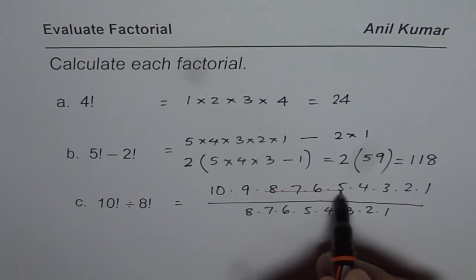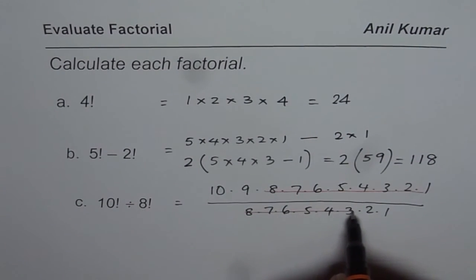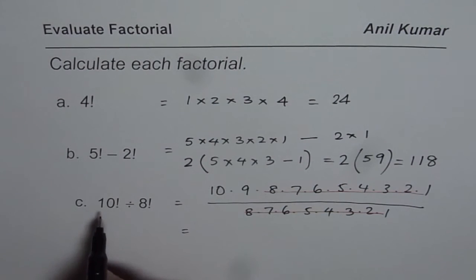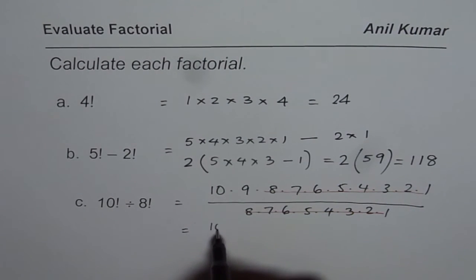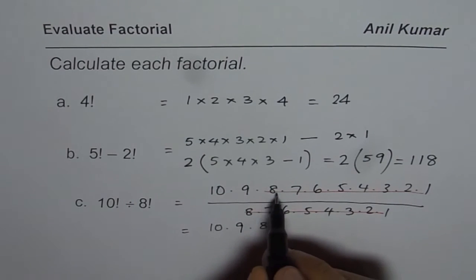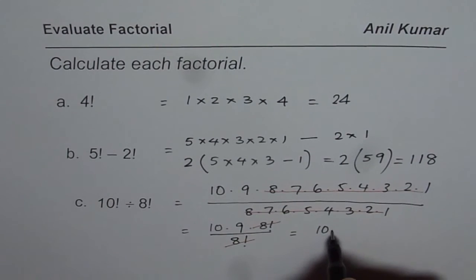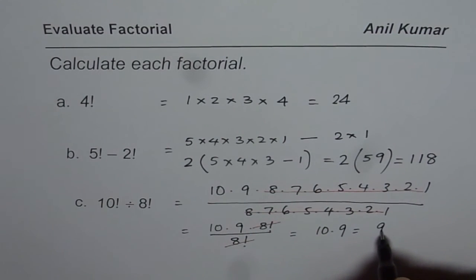Easy option is, you see this part which is kind of common, so you can cancel this out. So when we do more complicated questions, we will write 10 factorial as 10 times 9 times 8 factorial. This part is 8 factorial divided by 8 factorial and now we will cancel 8 factorial.